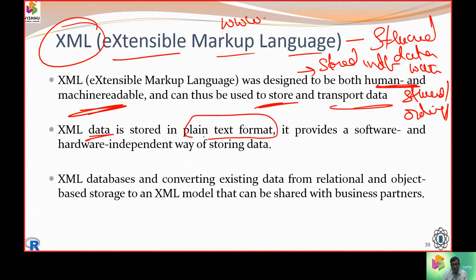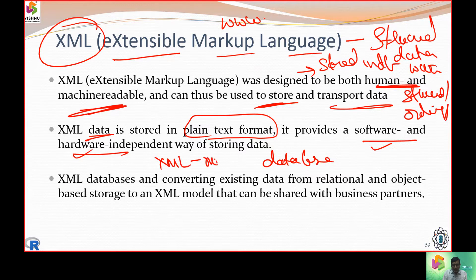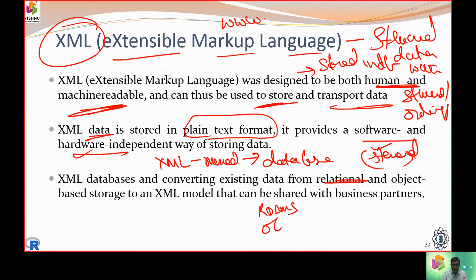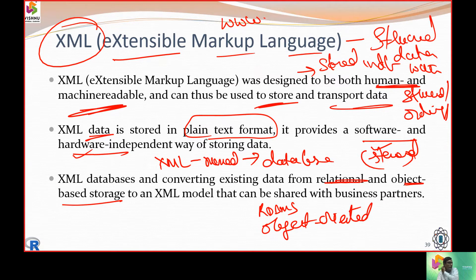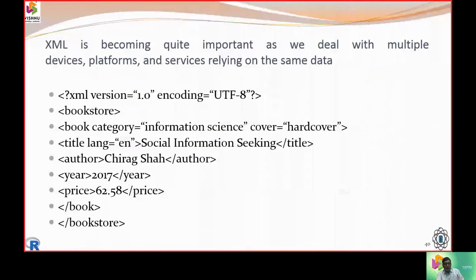XML data is stored in plain text and is software and hardware independent. It can be moved directly to a database and stored permanently. XML not only supports relational databases but also supports an object-oriented way of storing things — that is object-oriented storage.